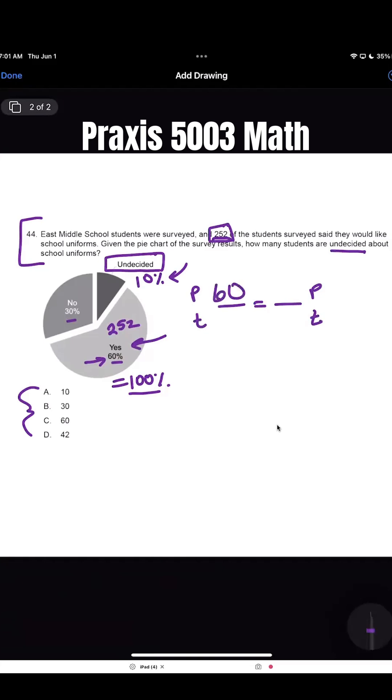60% over the total 100, 252 students over the total students, which I don't know. I'm going to cross multiply and solve here.